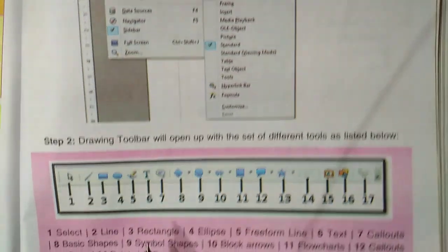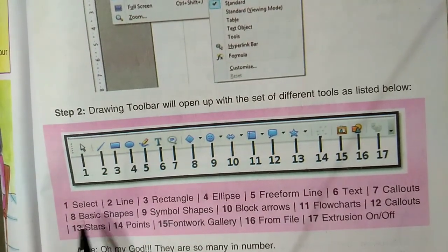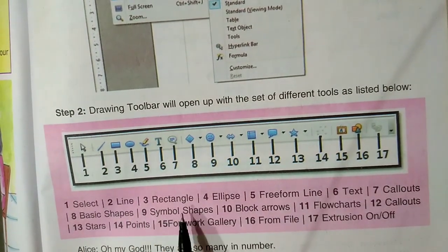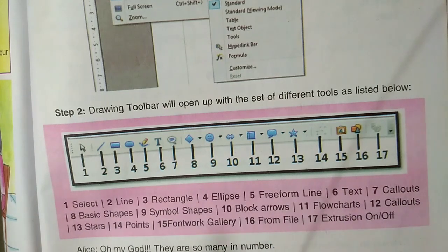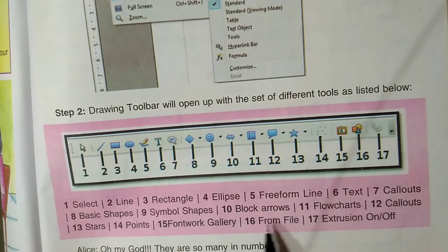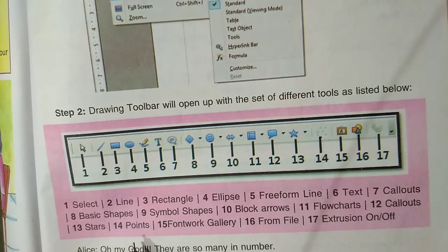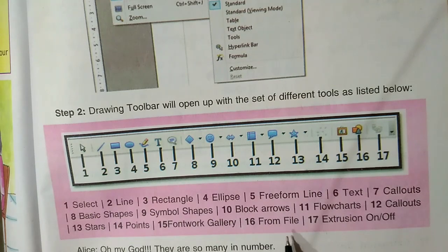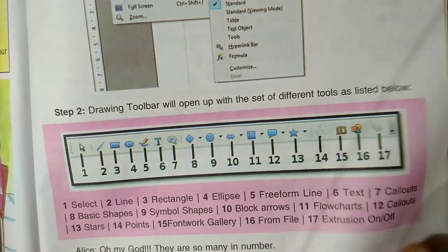Now, the drawing toolbar. There are so many tools in the drawing toolbar: Select, Line, Rectangle, Ellipse, Freeform Line, Text, Callouts, Basic Shapes, Symbol Shapes, Block Arrows, Flowcharts, Callouts, Stars, Points, FontWork Gallery, From File, and Extrusion On/Off.